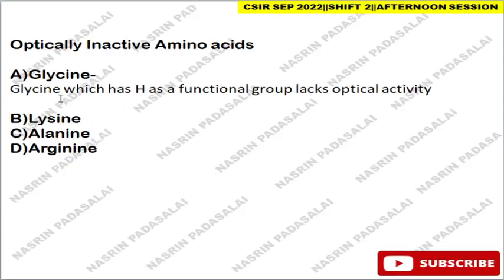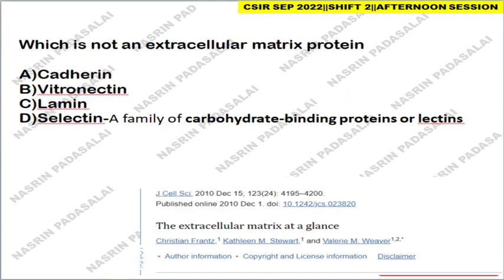Next: which amino acid is optically inactive? The correct answer is glycine. If you refer Lehninger's biochemistry textbook this is easy. Glycine has only H as its side-chain functional group and therefore lacks a chiral center, which is why it is optically inactive.